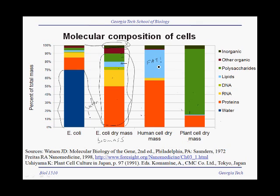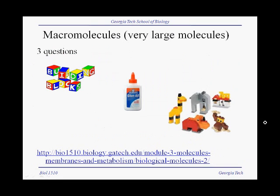In the last column, we see plant cells. Plant cells have very little fat and very little lipids. They have a fair amount of protein, but the vast bulk of a plant cell consists of polysaccharides. This makes a lot of sense because this includes cellulose — think about all the wood — and starch — think potatoes.